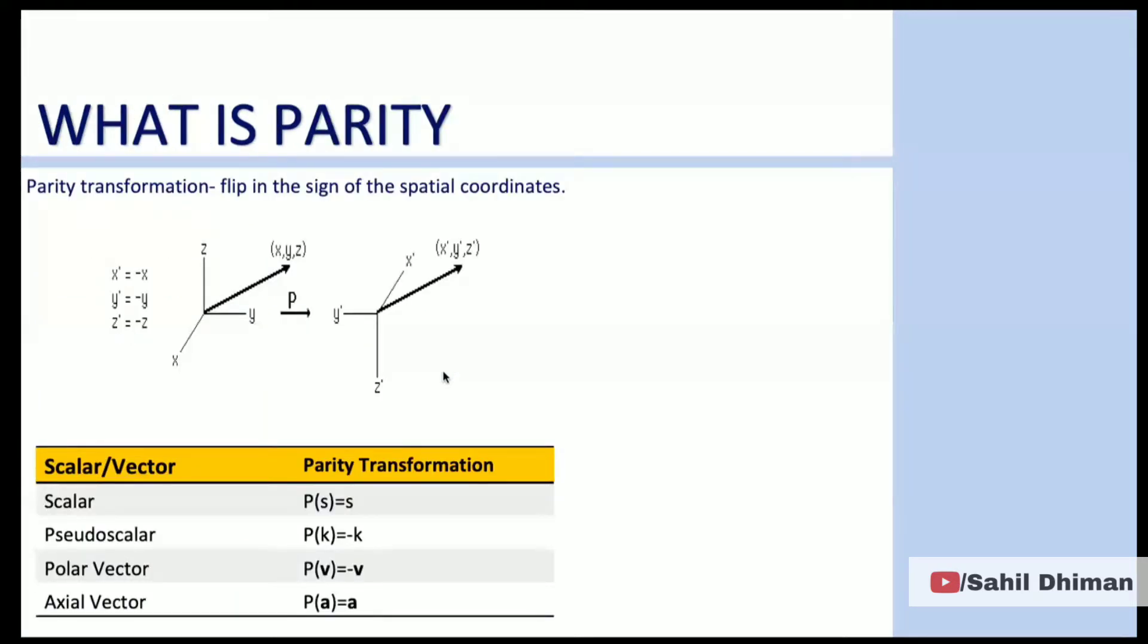What is parity? Parity transformation is a mathematical operation that flips the sign of the coordinate axis. If we apply this operation, the coordinate system goes from a right-handed system to a left-handed system. If I apply parity twice, I get back to the same object, meaning the parity operator has eigenvalues plus and minus one. We can think about this as reflections in a mirror where our left hand becomes a right hand and vice versa.